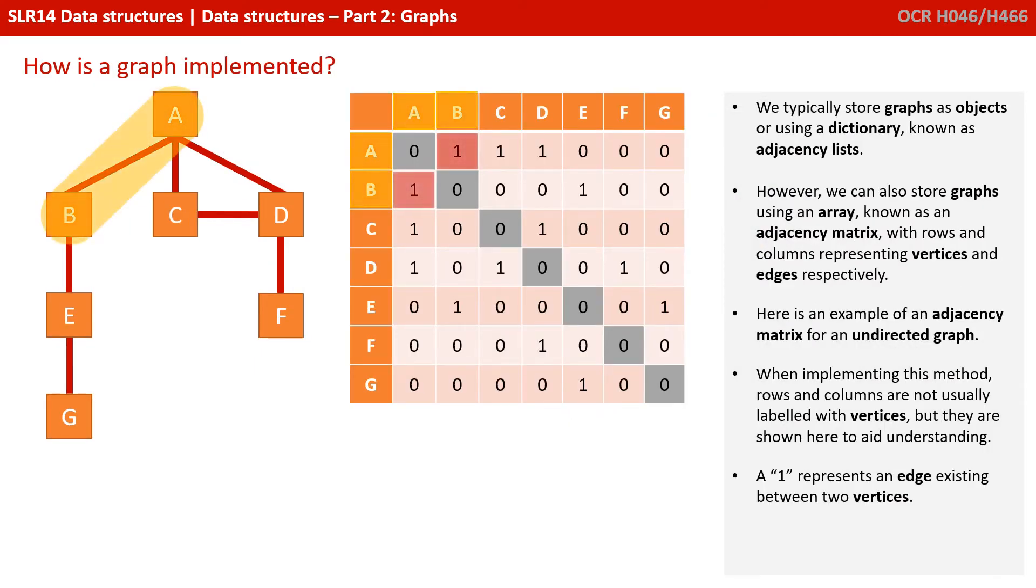We typically store graphs as objects, or using a dictionary known as adjacency lists. However, we can also store graphs using an array known as an adjacency matrix, with rows and columns representing vertices and edges respectively.